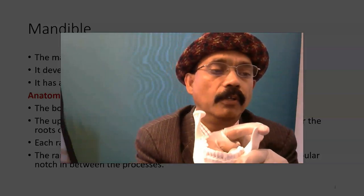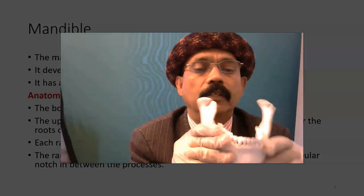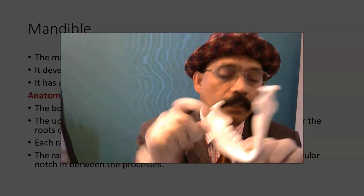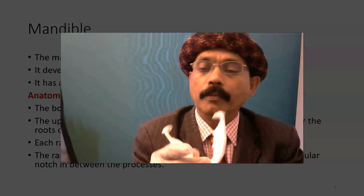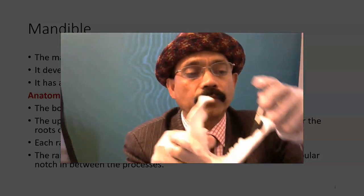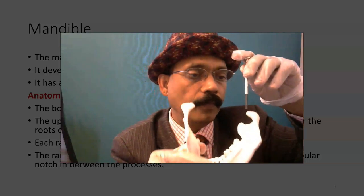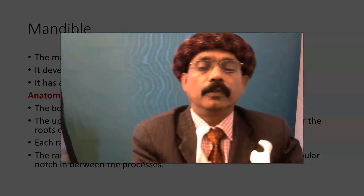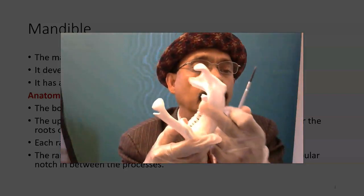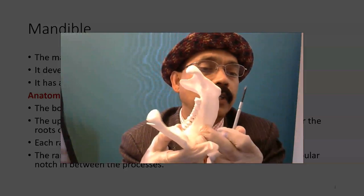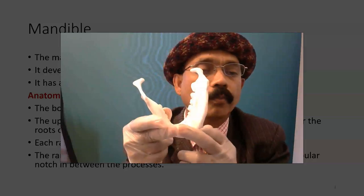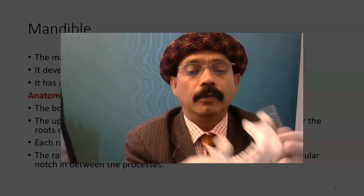This is the mandibular notch. Going inside, you will find the mandibular foramen. There is a bony process called the lingula. We also have the mylohyoid line inside, and here is the mylohyoid groove. Here is the genial tubercle, though it is not very prominent in this bone — this is an artificial bone.